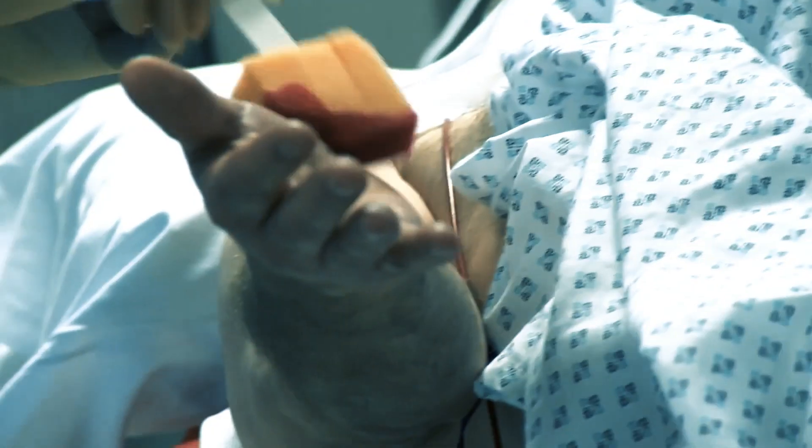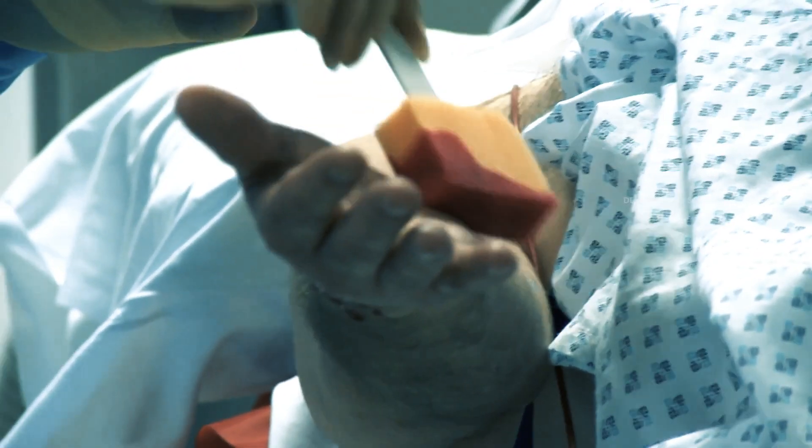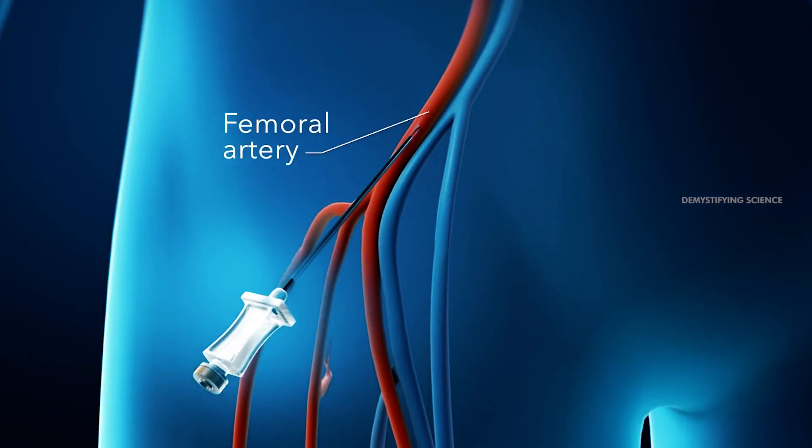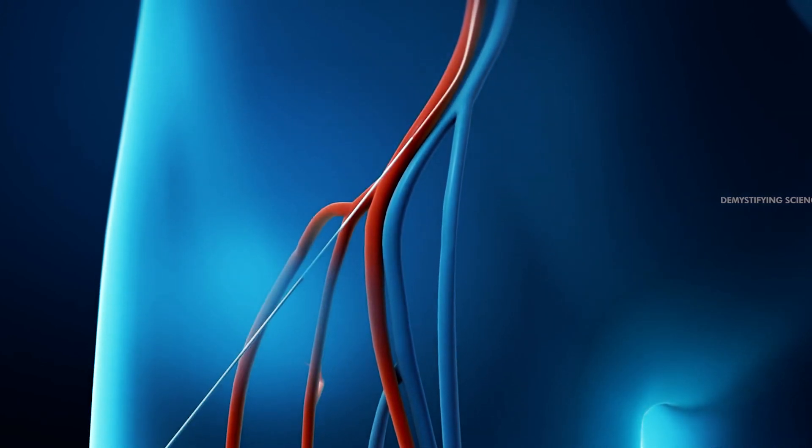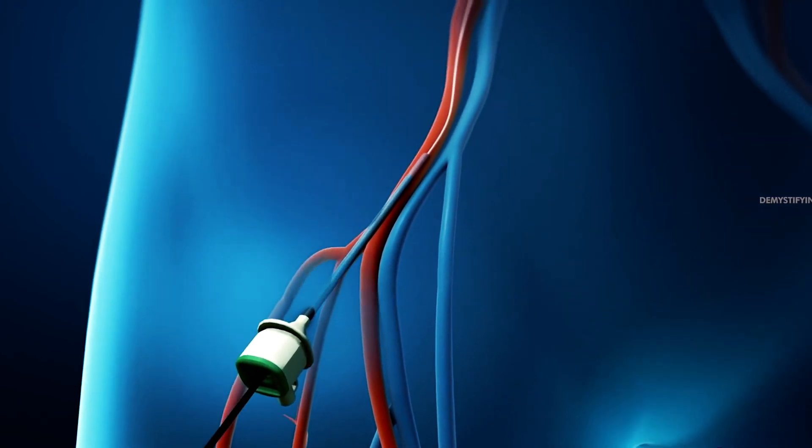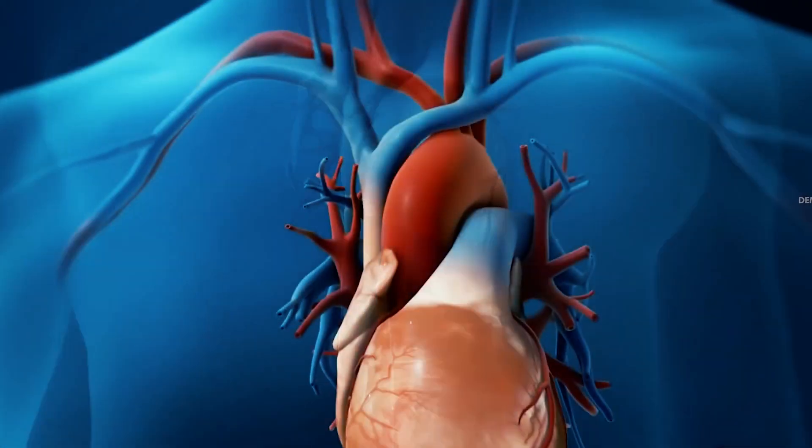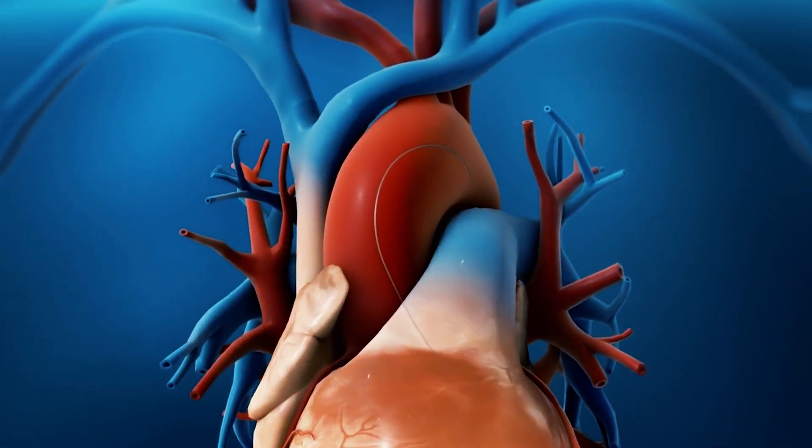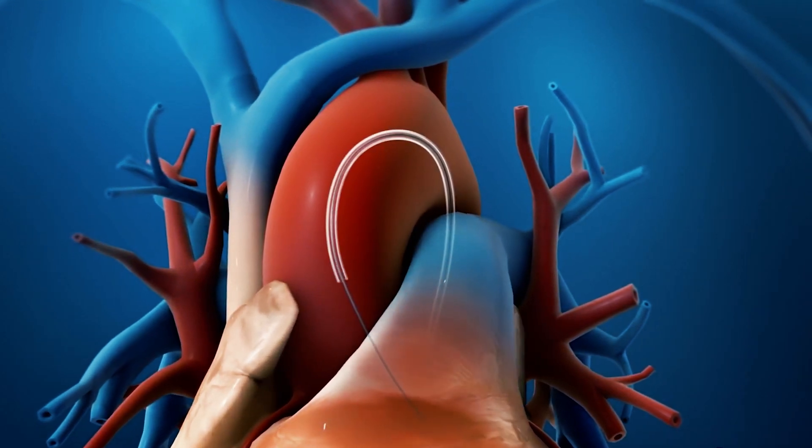An area of your body, the arm or groin, is cleaned and numbed with anesthetic. The cardiologist passes a thin hollow tube called a catheter through an artery. The doctor will use live x-ray pictures to carefully guide the catheter up into your heart and arteries.